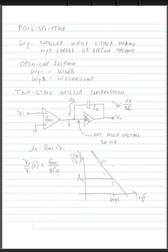So what we're going to look at instead is using a compensation technique called pole splitting, and the goal of this form of compensation is we're going to try and make omega p1 smaller.